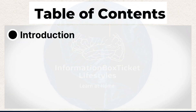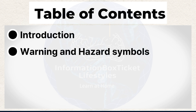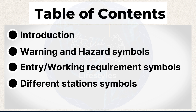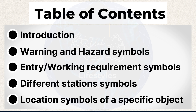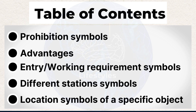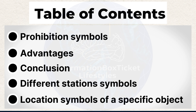Introduction to laboratory safety signs. A: Warning and hazard symbols in the lab. B: Entry/working requirement symbols in the lab. C: Different station symbols in the lab. D: Location symbols of a specific object in the lab. E: Prohibition symbols in the lab. Advantages of laboratory safety symbols. Conclusion.